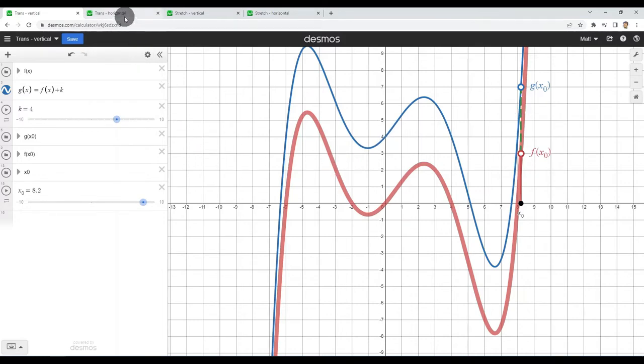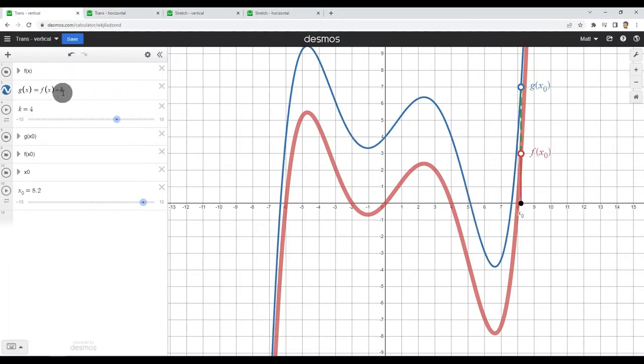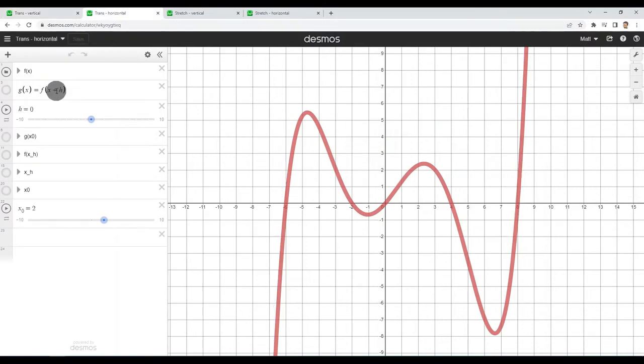Now let's look at the horizontal translations where we translate the graph side to side. Those are a little trickier to see what's going on, and the reason why is because the transformation happens first. Here I'm adjusting the x left or right and then I'm applying the function, and that's why it doesn't always work the way we expect.